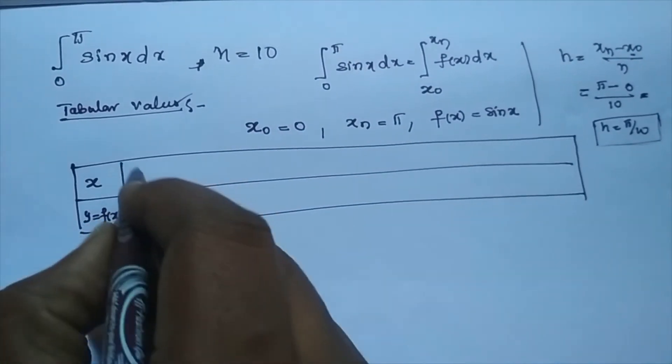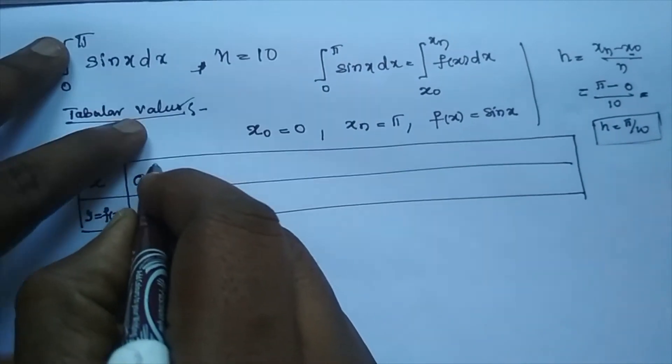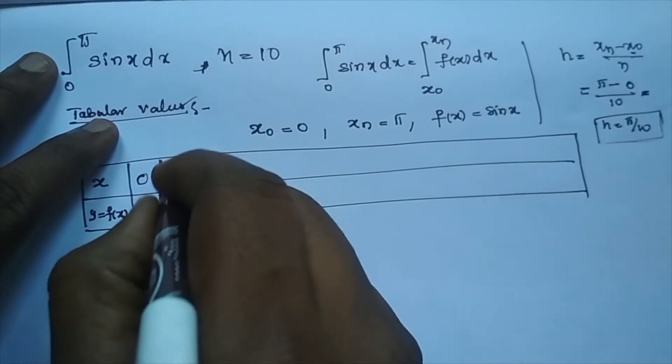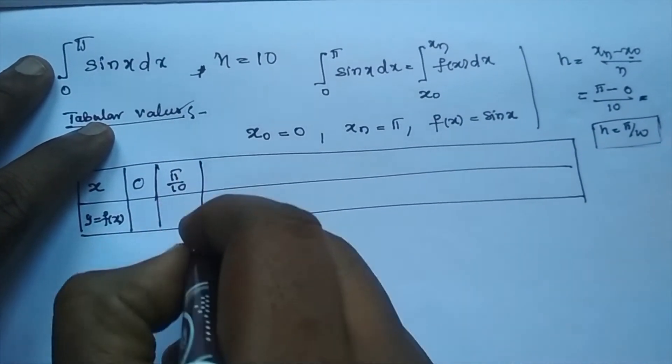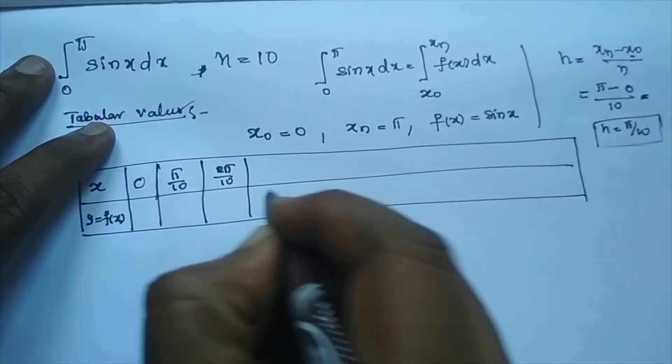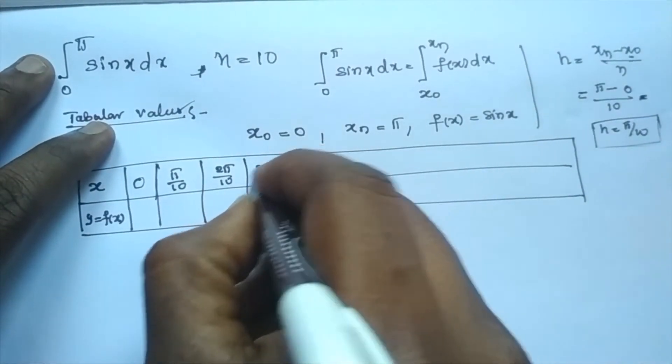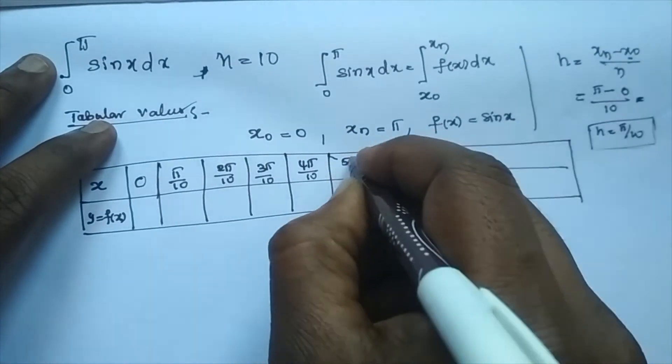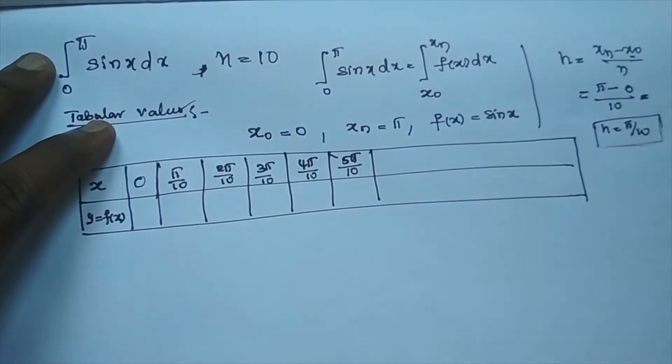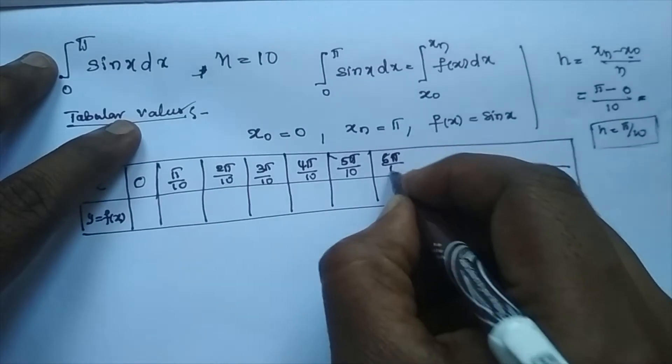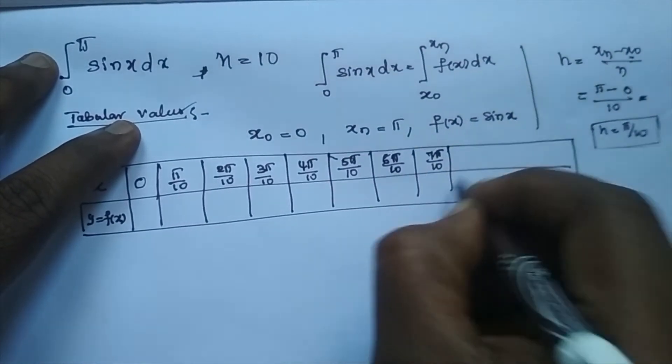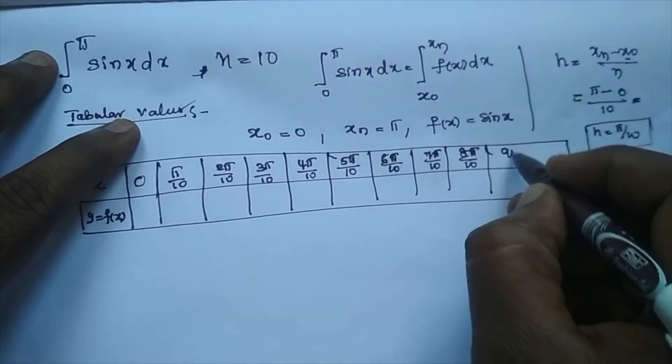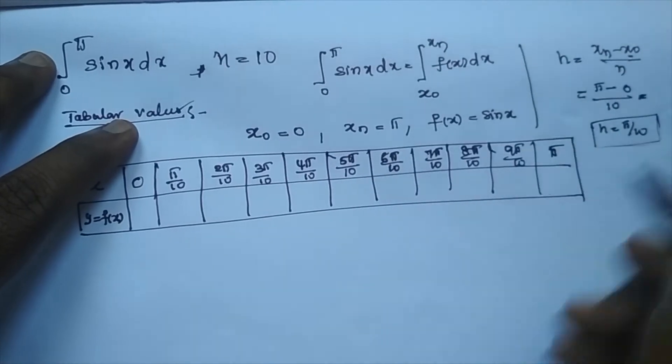After getting the length, now I should take the first value 0, next pi by 10, 2 pi by 10, 3 pi by 10, 4 pi by 10, 5 pi by 10, 6 pi by 10, 7 pi by 10, 8 pi by 10, 9 pi by 10, and this is the pi value.